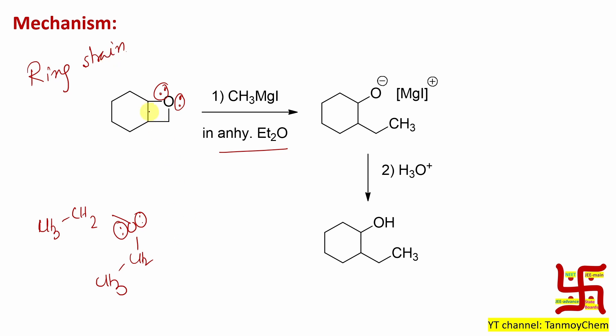4 member ring. Another thing, all are sp3 hybridized. So, this ring strain is the reason why this molecule will react with this Grignard reagent.